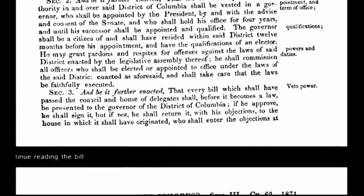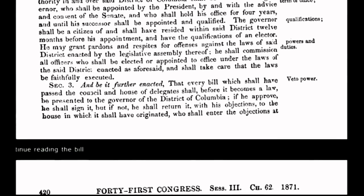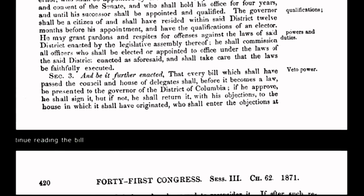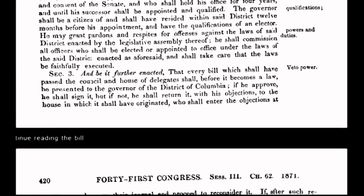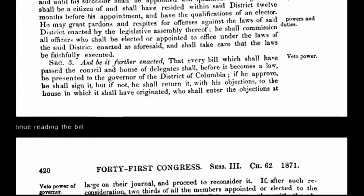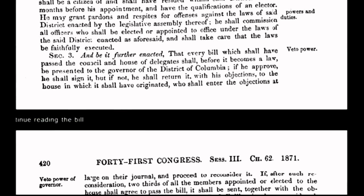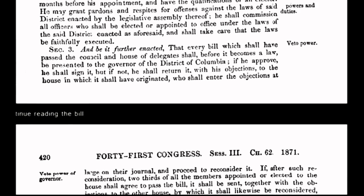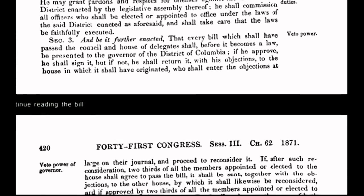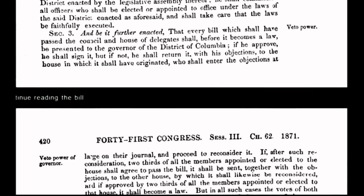What Congress did by passing the Act of 1871 was create an entirely new document, a constitution for the government of the District of Columbia, an incorporated government. This newly altered constitution was not intended to benefit the republic. It benefits only the corporation of the United States of America and operates entirely outside the original, organic constitution.